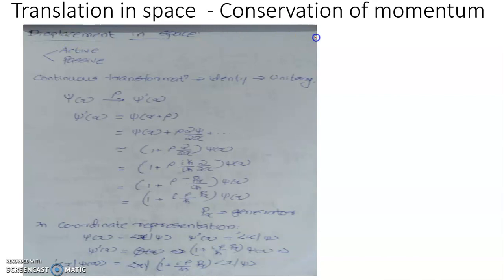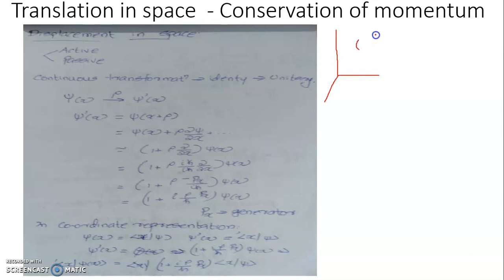The displacement can be of two different categories: an active displacement or a passive displacement. Suppose you have a system under study and to talk about the dynamics of the system, we associate it with a reference frame. With respect to this reference frame, it will have a three-dimensional space coordinate x, y, z. When the system undergoes a displacement, it will be associated with a constant or varying velocity.